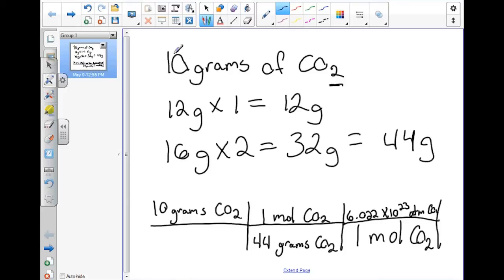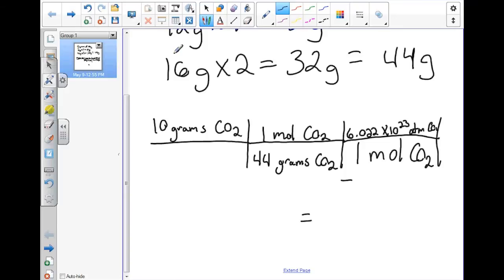And once we figure this out, we will take 10 grams divided by 44, divided by 44, and multiply by 6.022 times 10 to the 23rd, which will get us an answer of 1.37 times 10 to the 23rd. And that is how you go from grams to moles to atoms. Thank you.